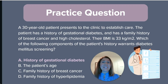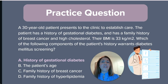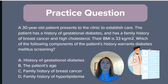The correct answer is option A — history of gestational diabetes. According to the American Diabetes Association guidelines, we should start screening all patients for diabetes at age 35. However, this patient is only 30, so certain risk factors warrant screening sooner, such as the patient's history of gestational diabetes and their BMI of greater than or equal to 25.